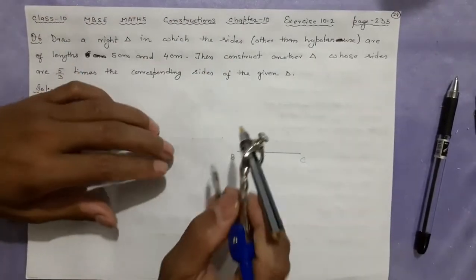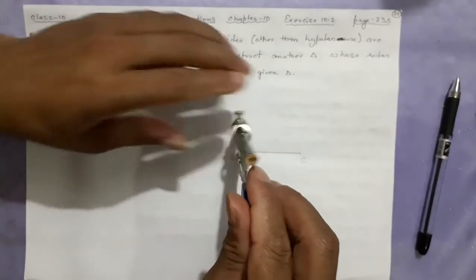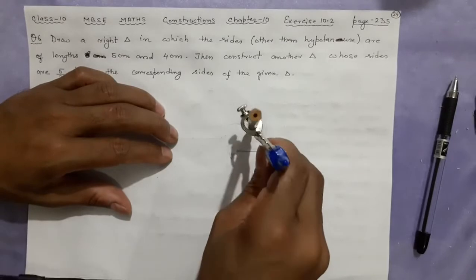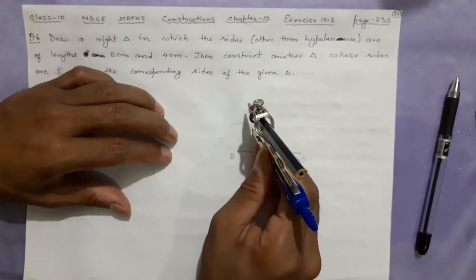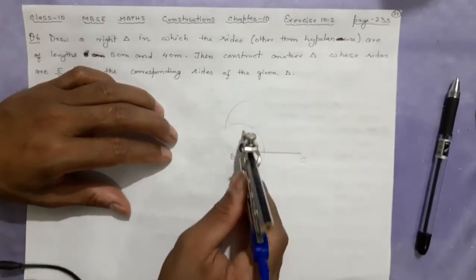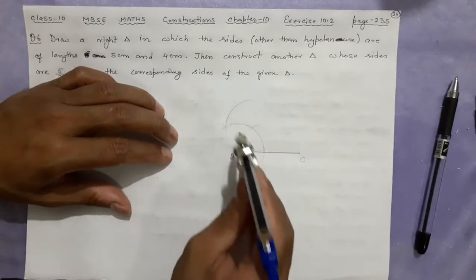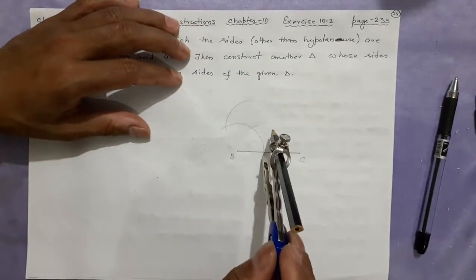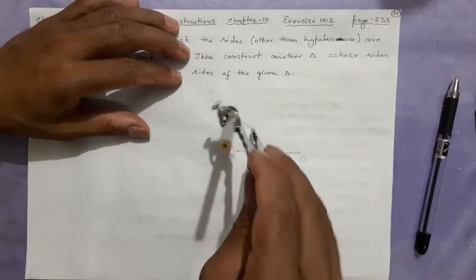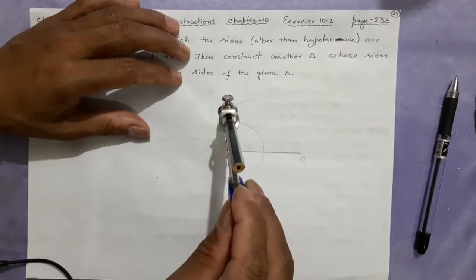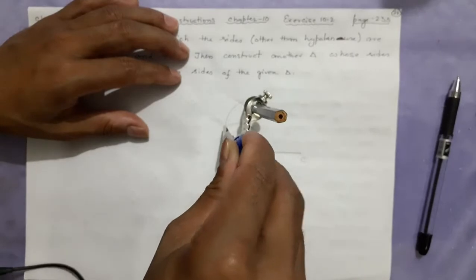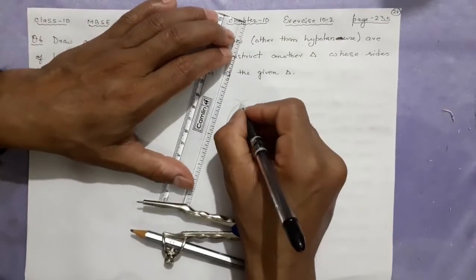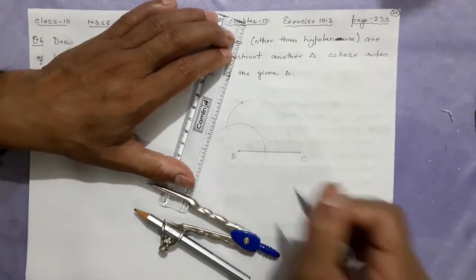To make 90 degrees, you know the process. Extend it a little bit more. The actual process: one, two, three, four — this is 90 degrees. Joining it to the starting point gives 90 degrees.